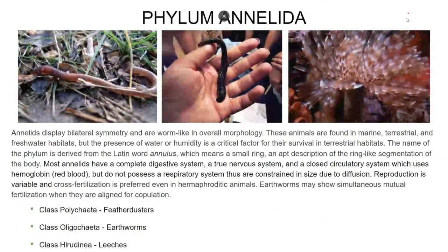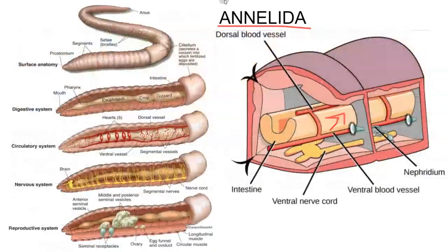Another type of worm is the annelid family — annelids are known as segmented worms. They have a complete digestive system, a true nervous system, and a closed circulatory system, and they are true coelomates with a true body cavity. So this is one of our more advanced animals. Annelida reproduce sexually, but they are hermaphroditic, so they can fertilize each other with cross-fertilization. Hermaphroditic organisms do not normally self-fertilize — these guys actually cross-fertilize with each other, both male-female impregnating the other male-female.